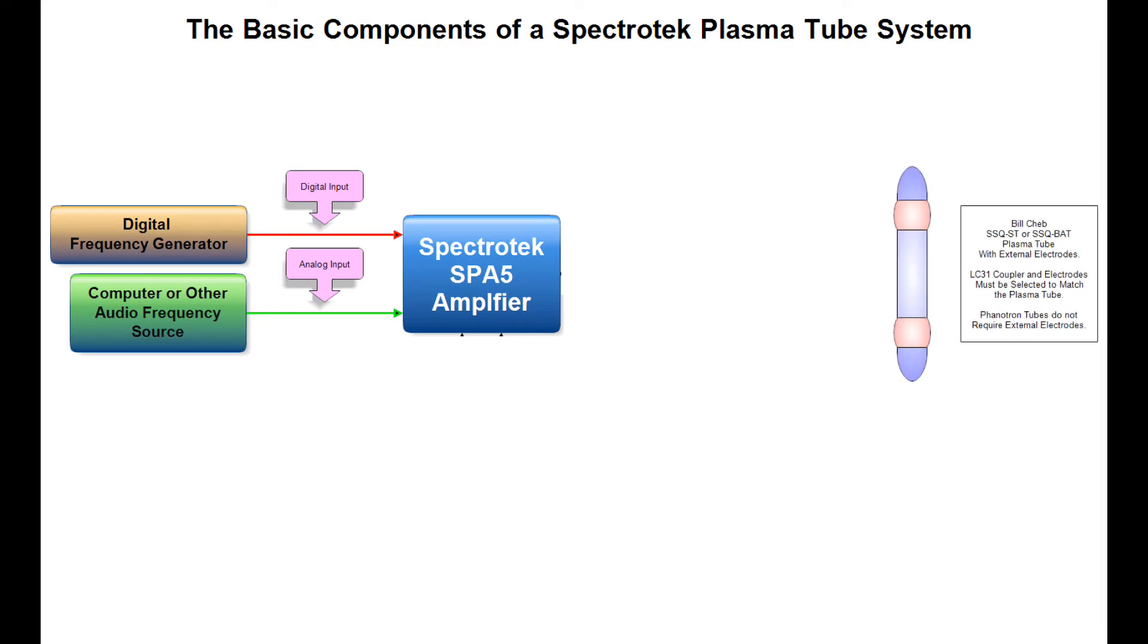Although any standard Bilchub plasma tube may be used, the system here shows an SSQ-ST or SSQ-BAT plasma tube. These tubes require external electrodes which are shown here by the pink bands adjacent to the ends of the tube.